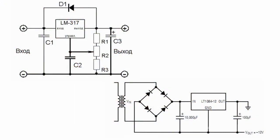If we use such stabilizers as the LM317 or LT1084, the outcome is not so great. The voltage drop on such stabilizers is about 1.5V.